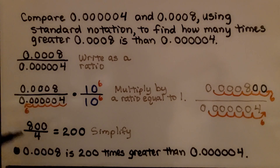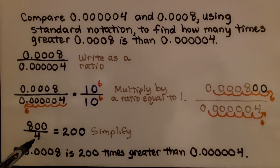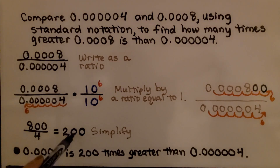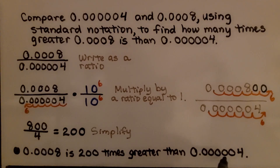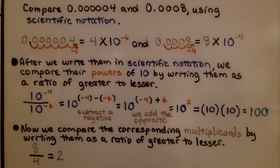We get 800 over 4, which when we simplify it is equal to 200. That means 0.0008 is 200 times greater than 0.00004.